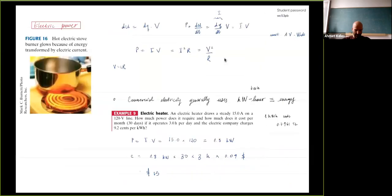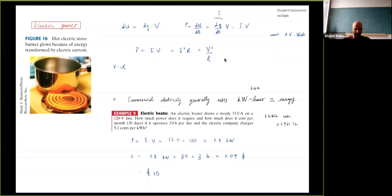Finally, we introduced electric power. For a charge flow Q with a voltage, that product is the energy. Taking the time derivative gives power, which is IV. You can write this in different forms: P equals IV, P equals I-squared R, or P equals V-squared over R.